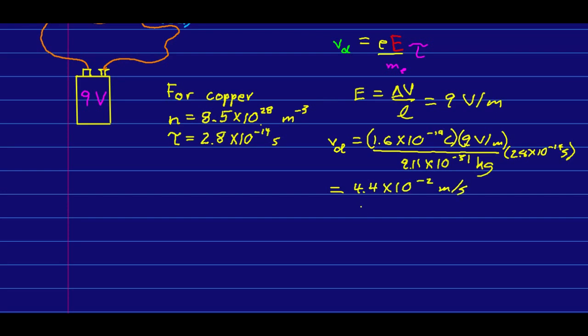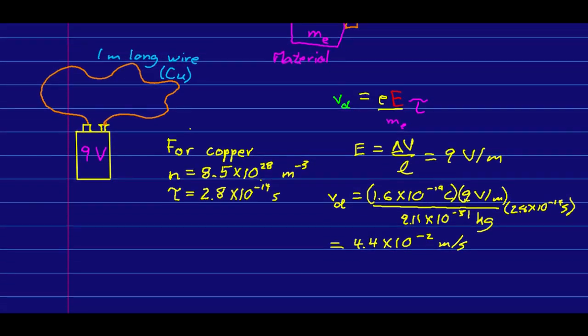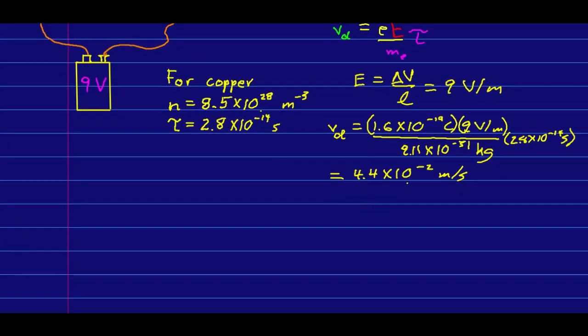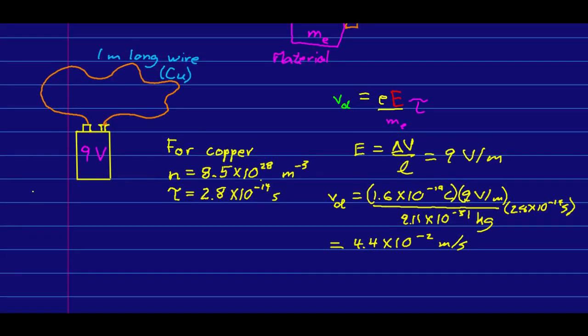And so we can now find our drift speed. And we get about 4.4 centimeters per second. And remember that this would be a ridiculously huge current. Typically, we see drift speeds that are more like 10 to the negative four, or 10 to the negative five meters per second.